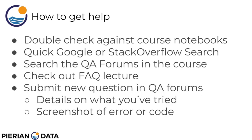Some general advice on how to get help in deep learning, Python, or PyTorch: first, double check against the course notebooks as already mentioned. Second, often a quick Google search or Stack Overflow search of your error or question will often reveal the results immediately — that's probably the fastest way to get help. I would also recommend searching the Q&A forums for previous questions posted, since it's very likely that someone else has posted the same question as you. Always do a search before actually posting a new question.